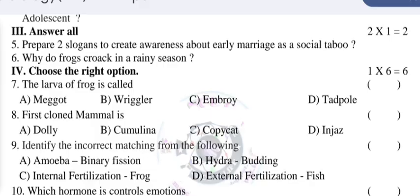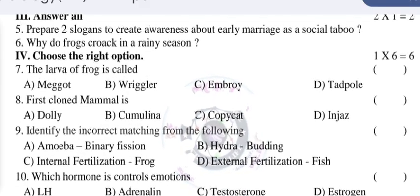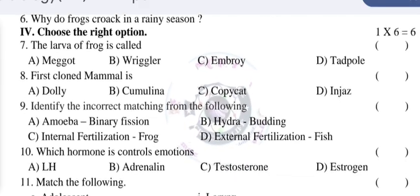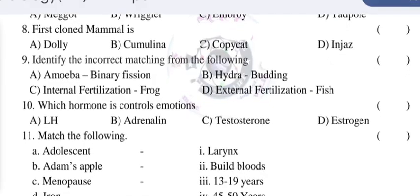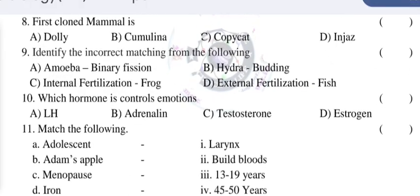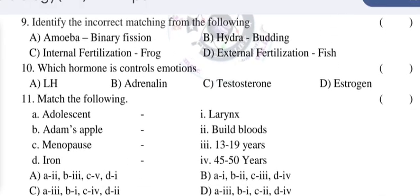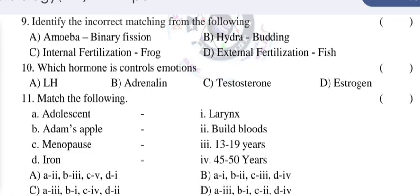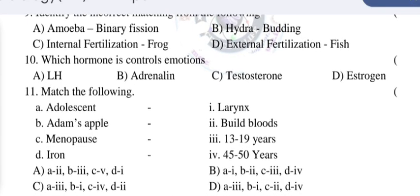The options given are: mega, regular, embryo, tadpole. First cloned mammals: Dolly, Cumulina, Copycat, Injus. Identify the incorrect matching from the following.